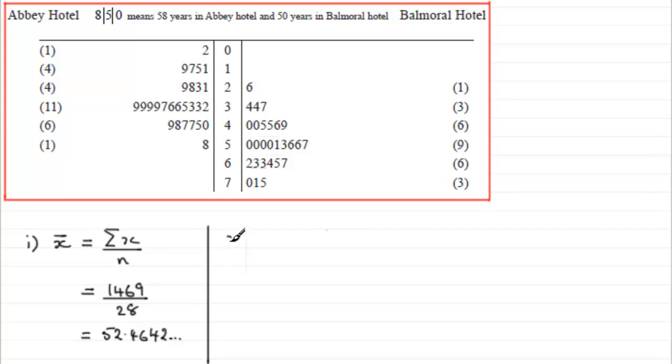Then what we've got is that the mean x-bar equals 52.5 years, to one decimal place. So that's the first part.